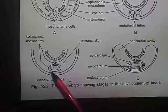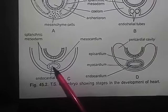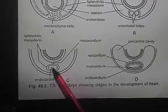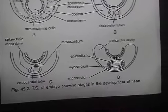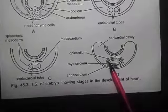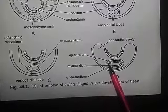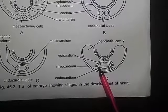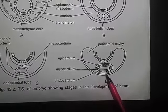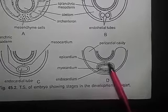This two-layer tube will form the heart. The splanchnic mesoderm thickens to form a myocardium or the muscular wall of the heart and an outer thin epicardium.